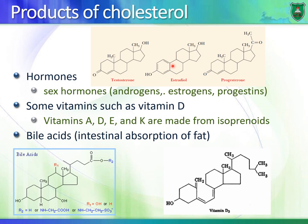We also have vitamins derived from isoprenoids, such as vitamins A, D, E, and K. Vitamin D in particular is made from cholesterol. You don't need to memorize the structure of vitamin D.